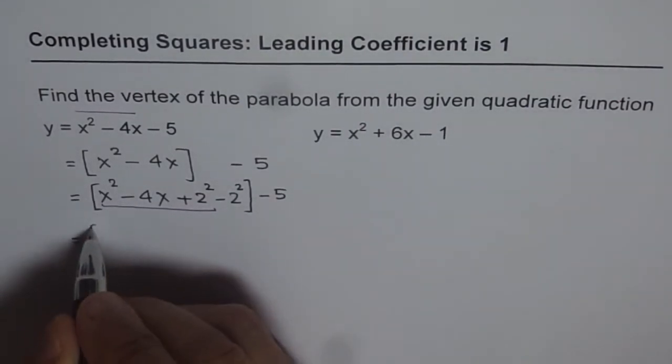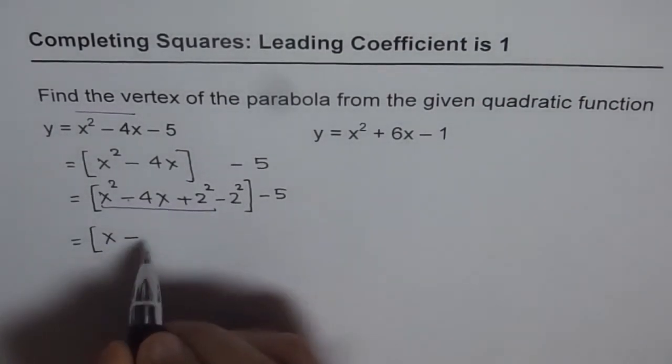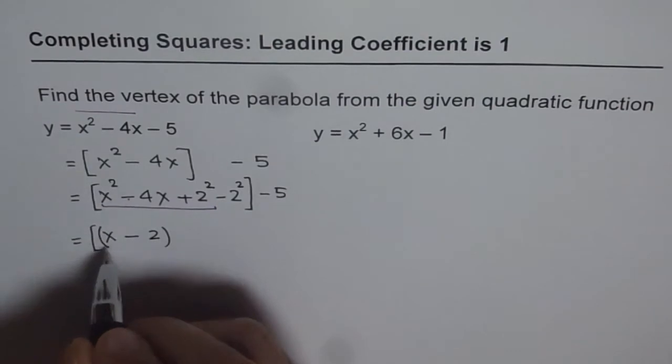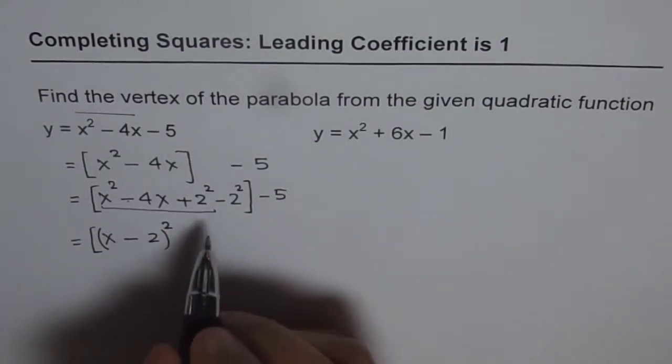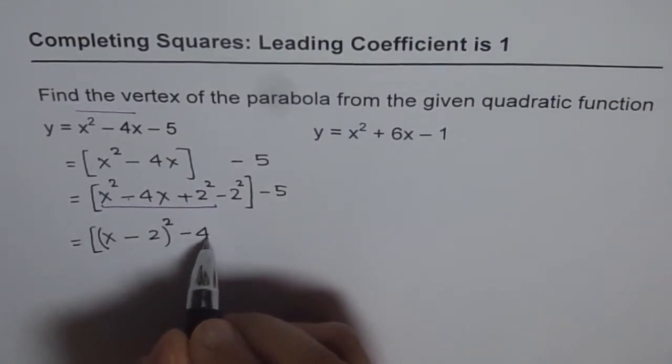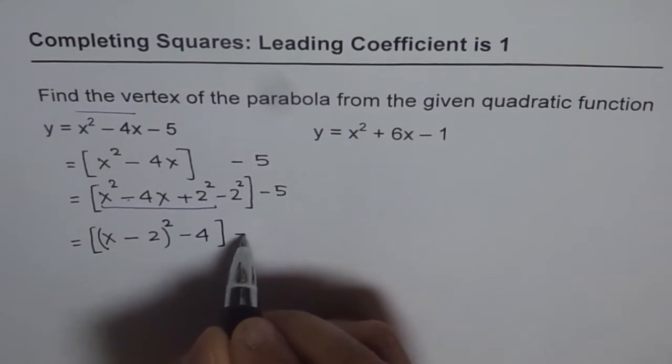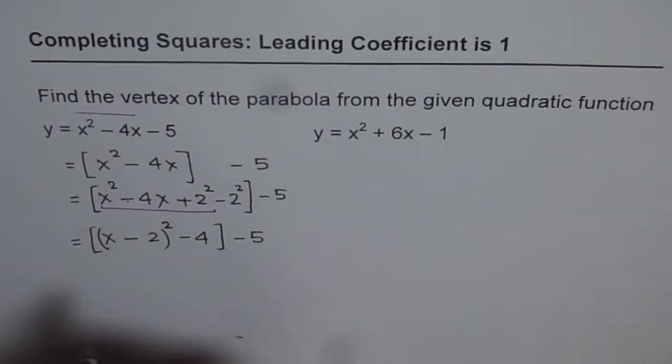And they can be written as x minus sign comes from there and 2 from here. x minus 2 whole square. So first three terms become a perfect square. Fourth term, you write as such, minus 2 square will give us minus 4. 2 square is 4, minus 5. And then, we can open these brackets.